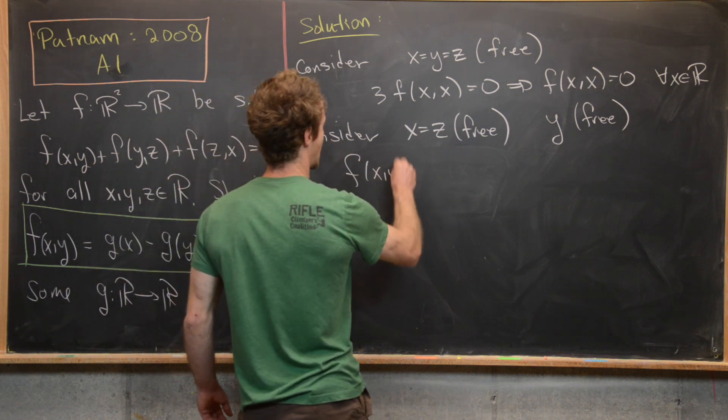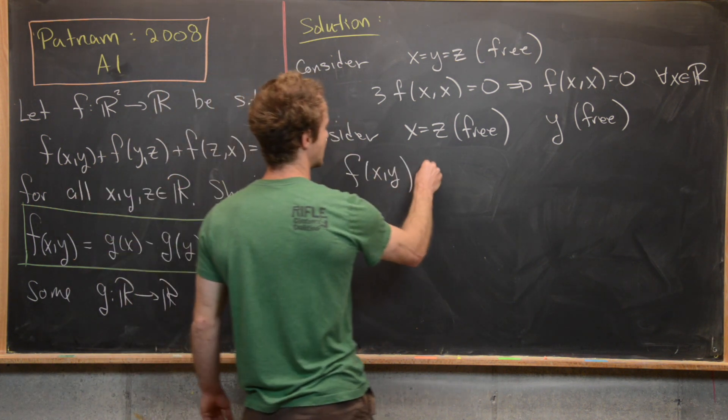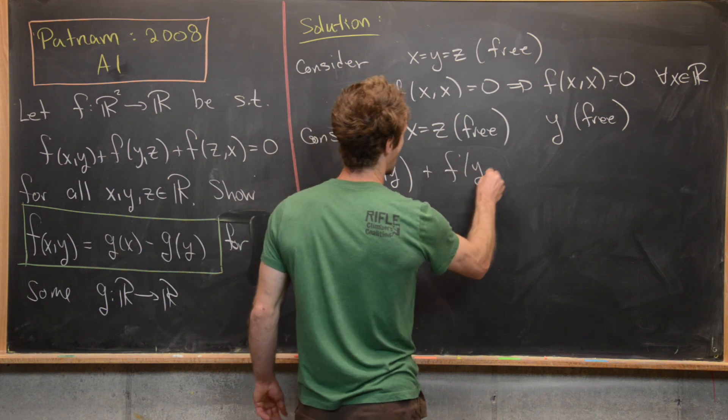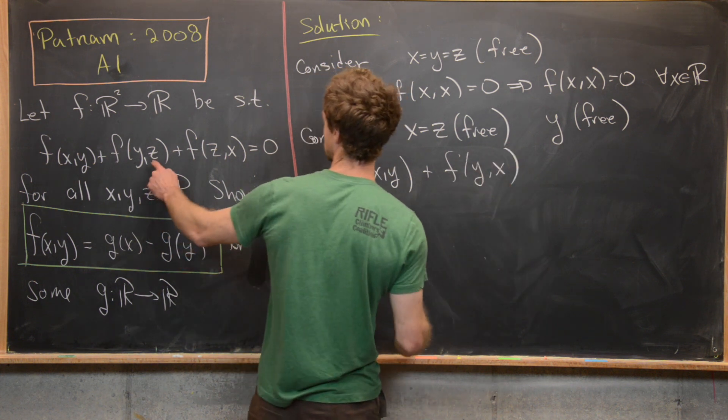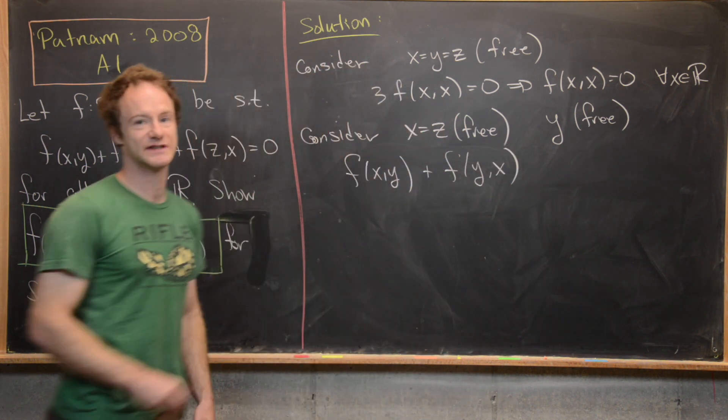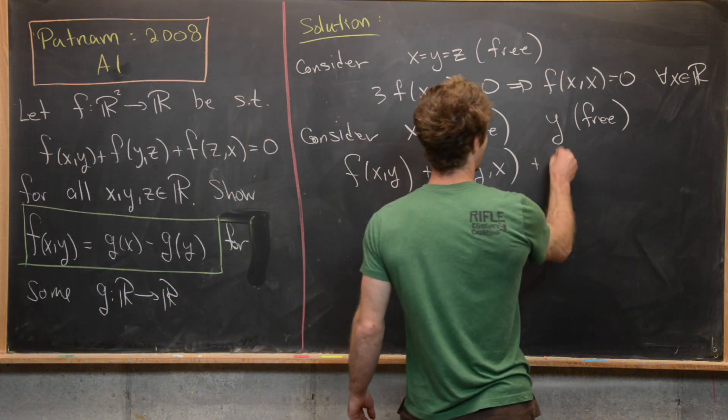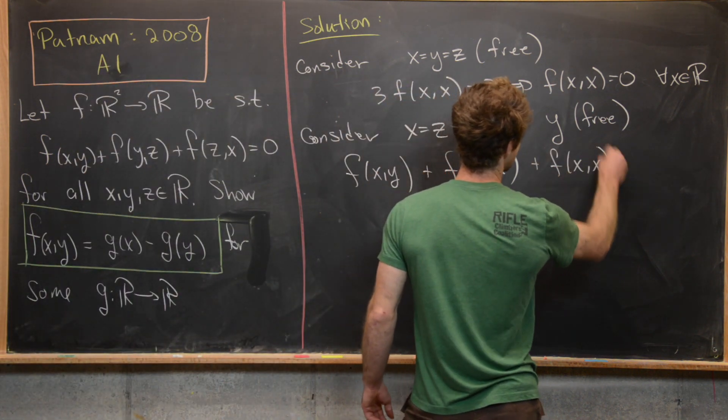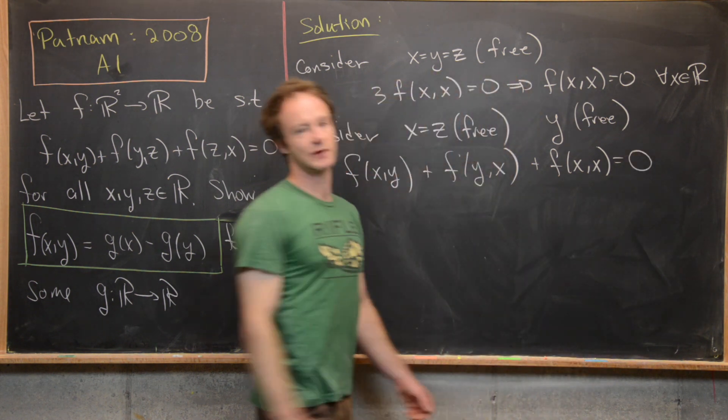So we're going to get f(x,y). So that's the first bit, then we're going to get plus f(y,x). That's the second bit again, because z is equal to x in this case. And then finally, plus f(x,x), again, because z is equal to x.